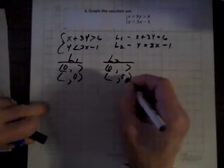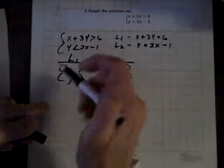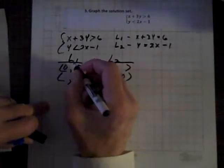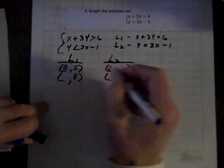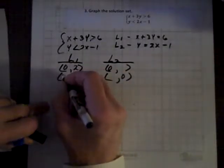0 and 0. And for the first line, if we let X be 0, we get 3Y equals 6. So dividing through by 3, Y must equal 2. Now, if Y is 0, then we get X equal to 6.